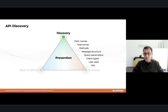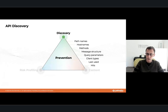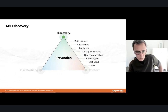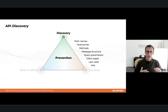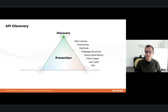Most API security point solutions concentrate on API discovery and traffic profiling — looking at endpoint paths, hostnames, HTTP methods like GET, PUT, DELETE, message structure, query parameters, client types, last-used timestamps, and hit counts. That is common practice for every API security point solution — they look at the traffic, profile the traffic, and apply security on the traffic. But that is the only layer they use.